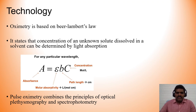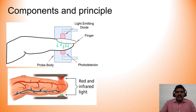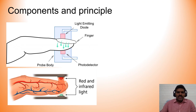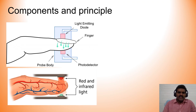Pulse oximetry combines the principles of optical plethysmography and spectrophotometry. The basic design described here is the finger-mounted pulse oximeter, though other types can be mounted on the earlobe, nose, or nasal septum to monitor central oxygen. The most commonly used is the finger-mounted pulse oximeter. On one side of the probe you find a light-emitting diode.